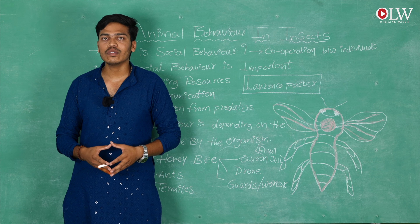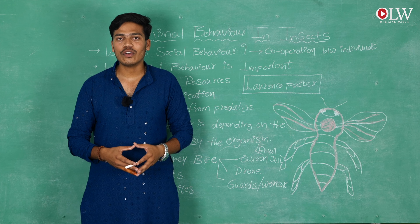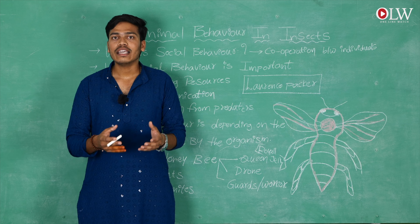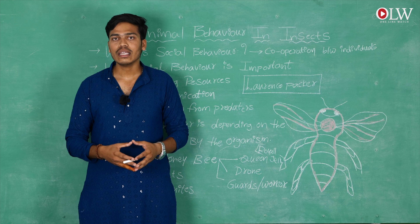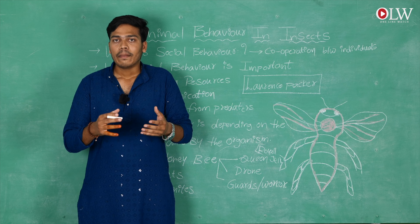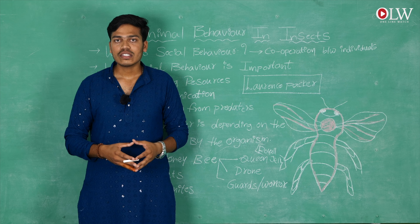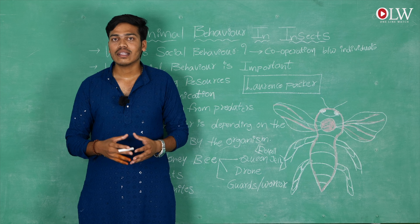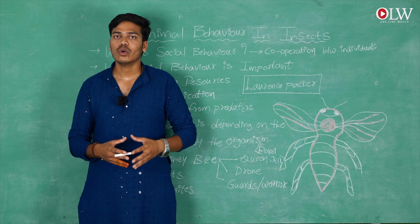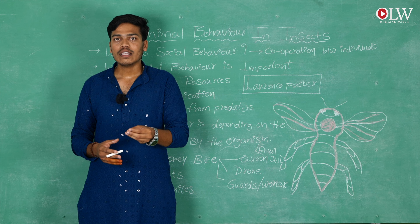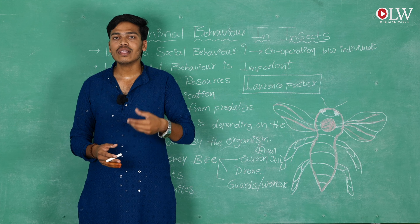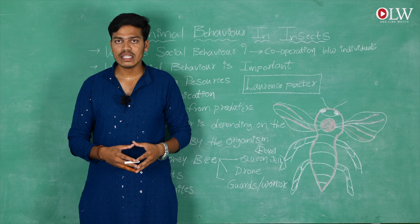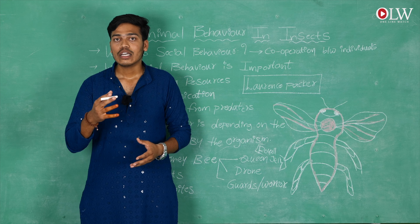Next is the drone. The drone is the male individual in the colony. The only function of the drone is to participate in the mating process, the sexual reproduction process, to produce babies, and to give sperms to the queen. The drone is selected by the queen bee, and after the mating process, the drone will die.